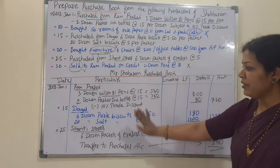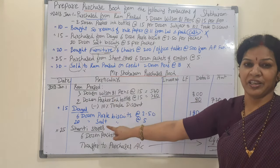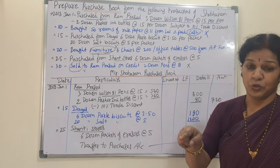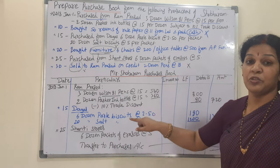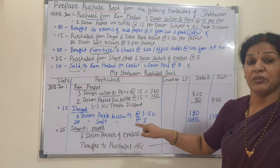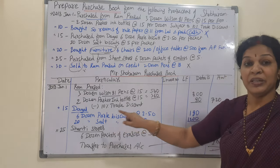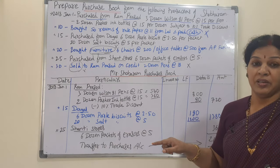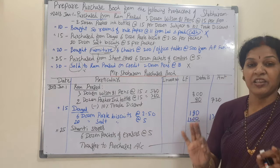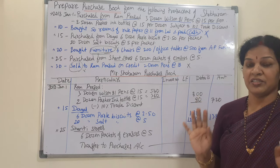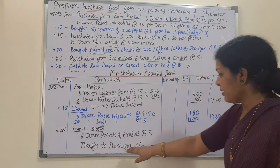You have to be very careful with the dozen calculations. Six dozen means 6 × 12 = 72. Then 72 × 2 rupees 50 paisa. In the same way, twenty dozen means 20 × 12 = 240, and 240 × 5 rupees. Be very careful with such calculations.